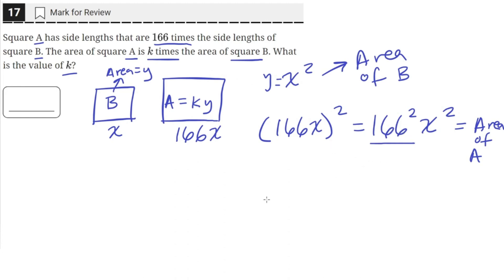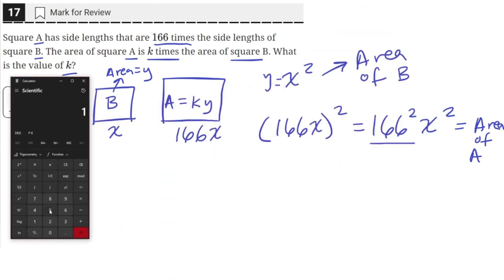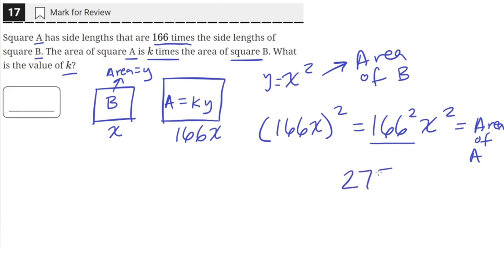So we just need to square 166. We can do that in our calculator. So 166 times 166, which is just equal to 27,556.